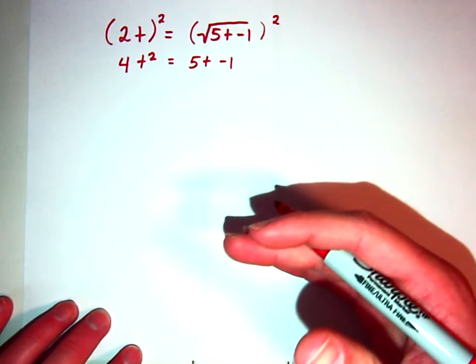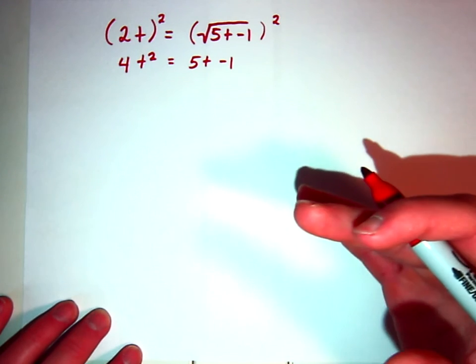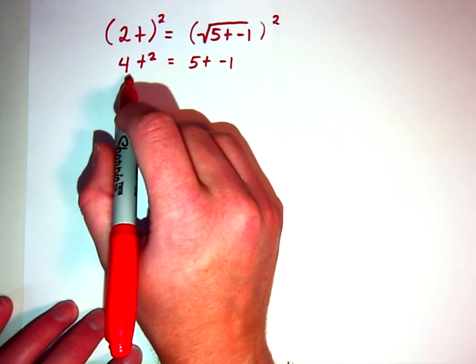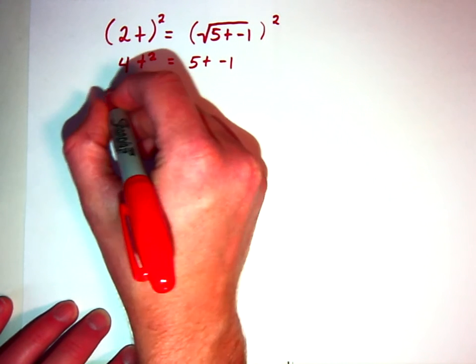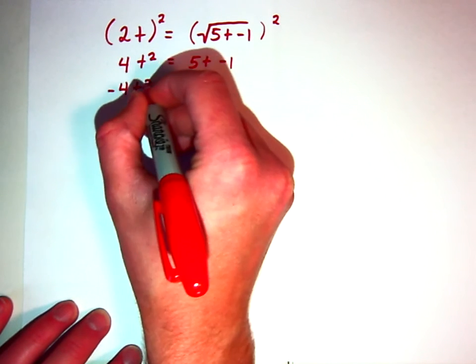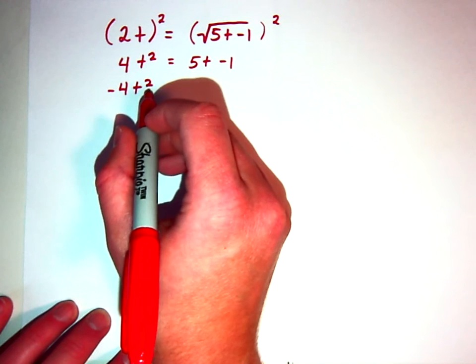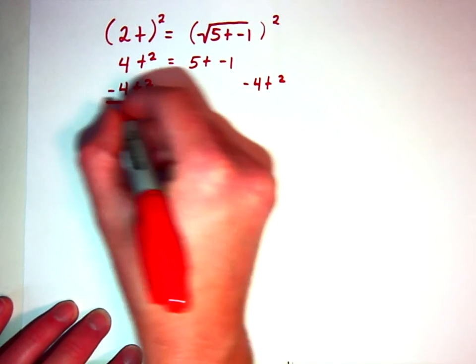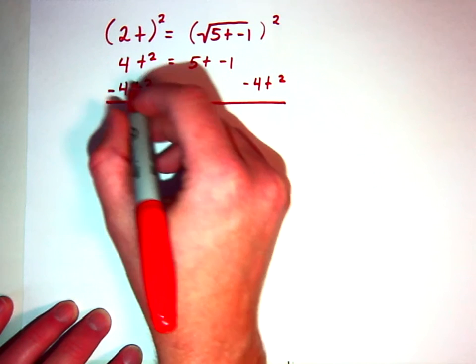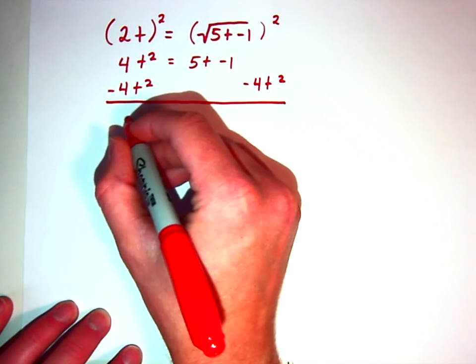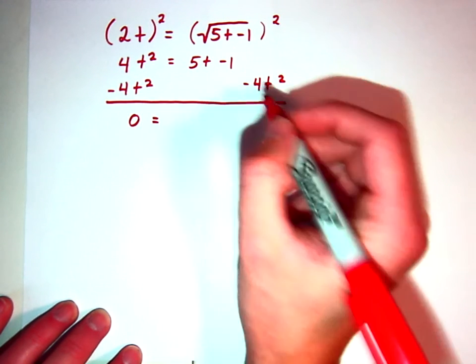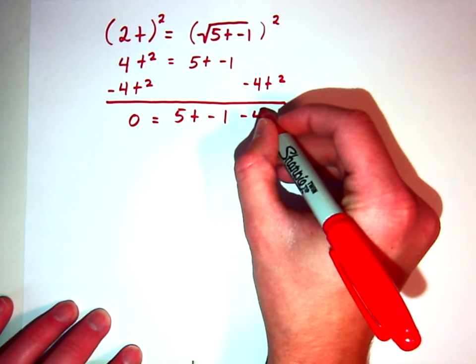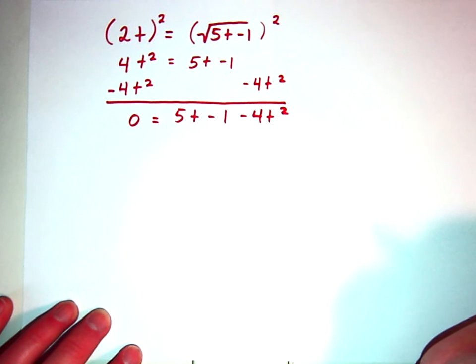From there, we want to get pretty much everything over onto one side. Since this is the only thing on the left side of our equation, I'm going to move it over. So, I'm going to use my inverse operations, and I'm going to subtract 4t squared from both sides. Well, if I subtract it from the left side, that's going to get me 0 equals 5t minus 1 minus 4t squared.